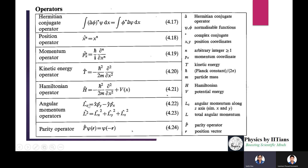For angular momentum, the z-component operator: L-hat_z equals x-hat p-hat_y minus y-hat p-hat_x. The total angular momentum squared L^2 is the combination of all three components: L_x^2 plus L_y^2 plus L_z^2. The parity operator P-hat acting on psi(r) gives psi(-r).